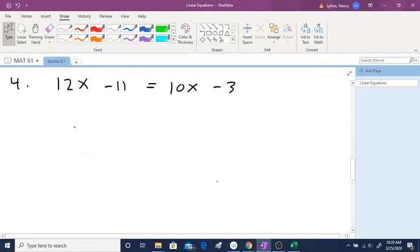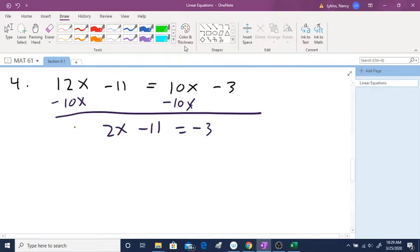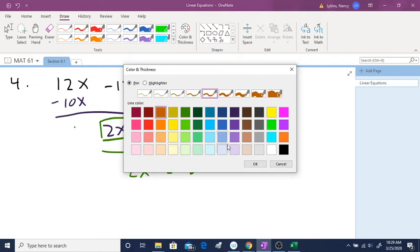I want you all to look at this, 12x minus 11 equals 10x minus 3. You want to pause this, and then come back to see if you did this correctly. In this one, I'm looking at my 12x and my 10x. The 12 is more positive, so I'm going to subtract 10x on both sides. So I get 2x minus 11 equals minus 3.